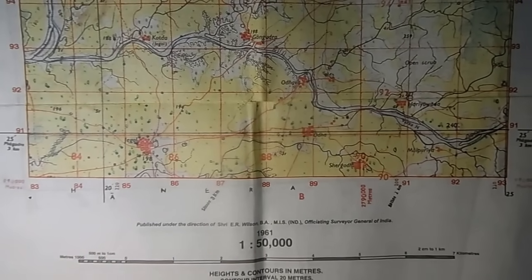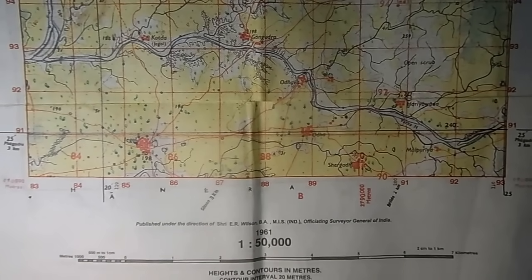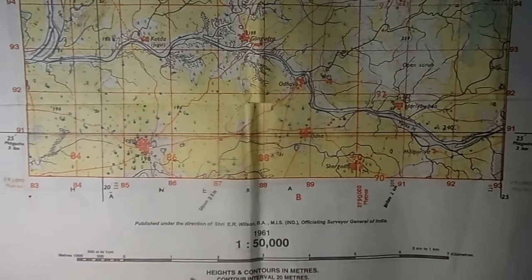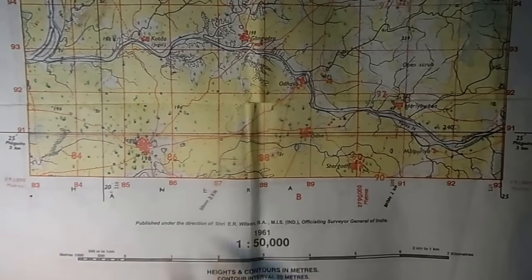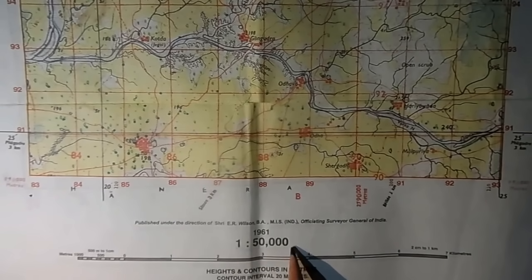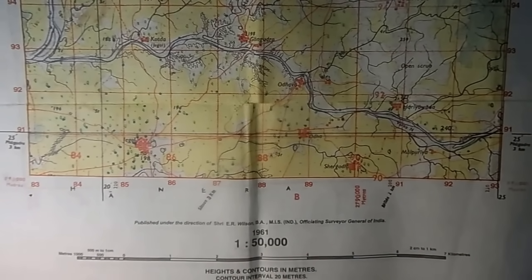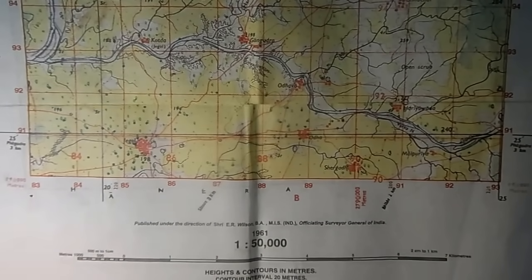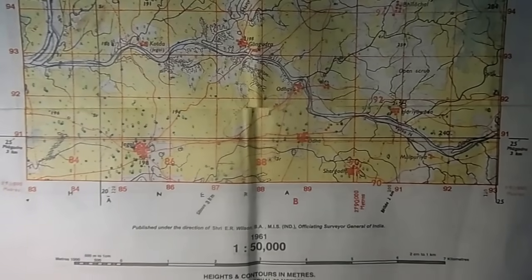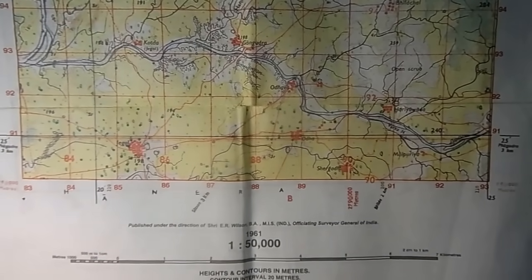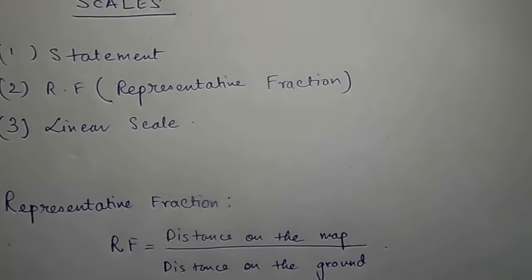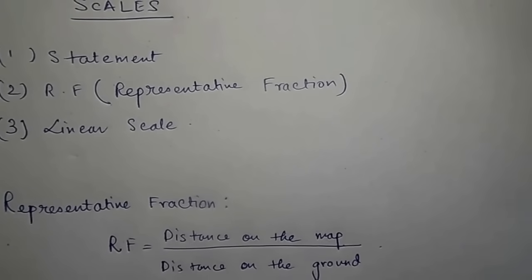To understand topographical maps, you need to understand the scale of your maps first. You can see two things here: '1 to 50,000' and a whole scale bar. Now '1 to 50,000' is the RF — the representative fraction — and the scale bar is called the linear scale. Scales are of three types: Statement, RF, and linear scale. RF and linear scale are the scales used in a topographical map.